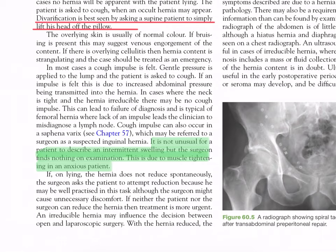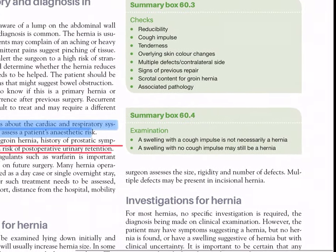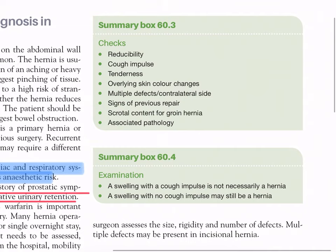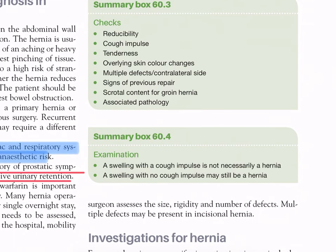If on lying the hernia does not reduce spontaneously, the surgeon asks the patient to attempt reduction. If neither patient nor surgeon can reduce the hernia, then treatment is more urgent. An irreducible hernia may influence the decision between open and laparoscopic surgery. With the hernia reduced, the surgeon assesses the size, rigidity, and number of defects — multiple defects may be present in incisional hernia. Summary: checks include irreducibility, cough impulse, tenderness, overlying skin color changes, multiple defects or contralateral side, signs of previous repair, scrotal content for groin hernia, and associated pathology. A swelling with a cough impulse is not necessarily a hernia; a swelling with no cough impulse must still be considered a hernia.